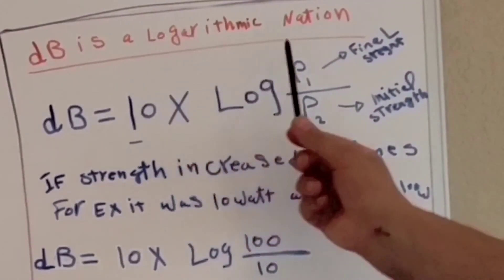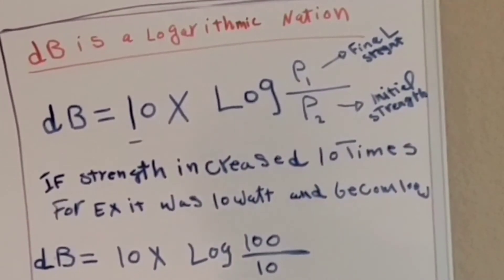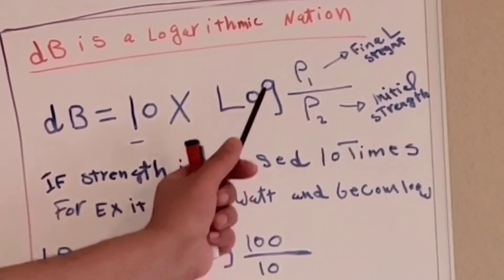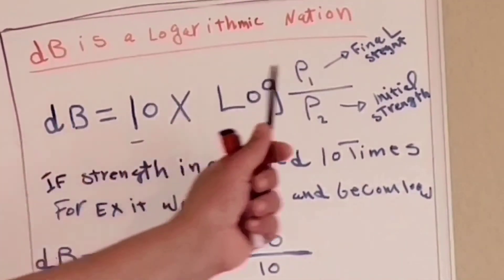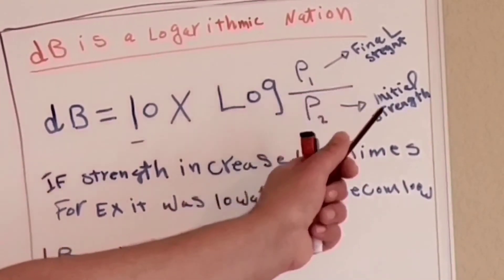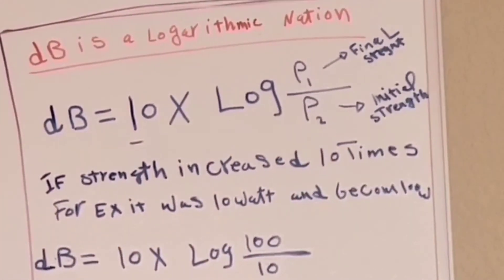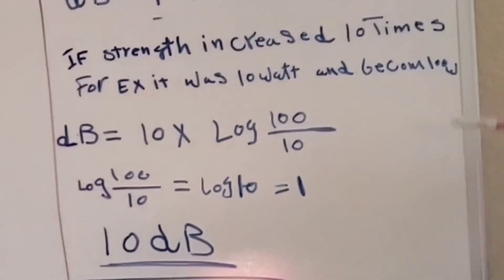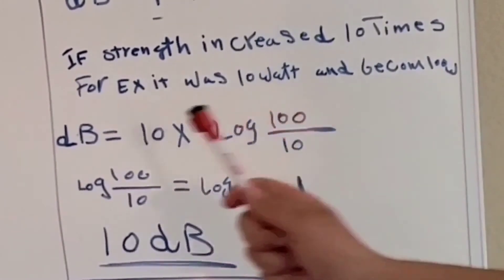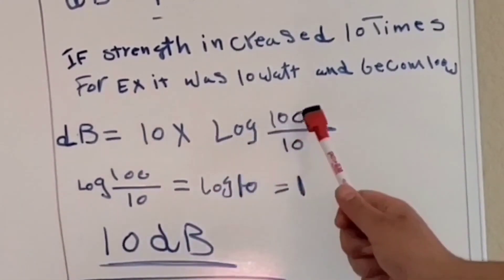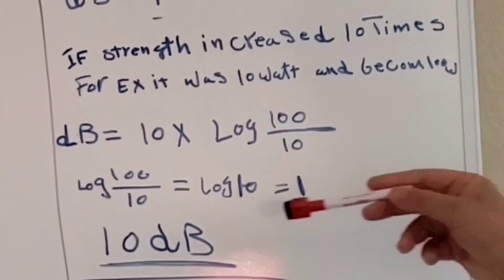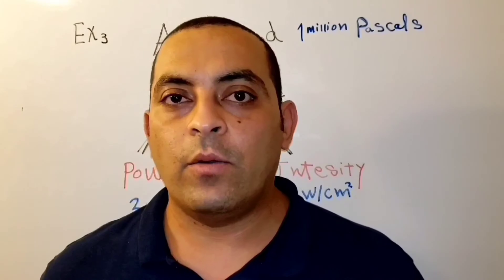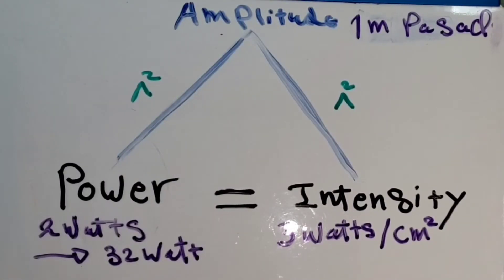Now we know that the decibel is a logarithmic notation. The decibel equals ten times the log of P1 divided by P2, where P1 is the final strength and P2 is the initial strength. For example, if the strength increases ten times — say from ten watts to one hundred watts — then the decibels equal ten times the log of one hundred over ten. One hundred over ten equals ten, log of ten is one, so it equals ten decibels.